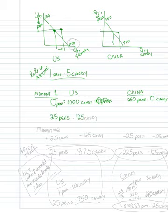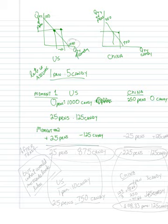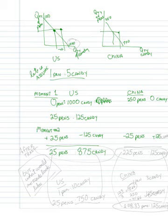Let's pick a trade of 25 pens for 125 candy — that's a one-to-five ratio. In moment two, the U.S. loses 125 candy but gains 25 pens, so their new position is 25 pens and 875 candy. For China, they lose 25 pens but gain 125 candy — because they want both goods, so they're trading for the thing they're trying to get.